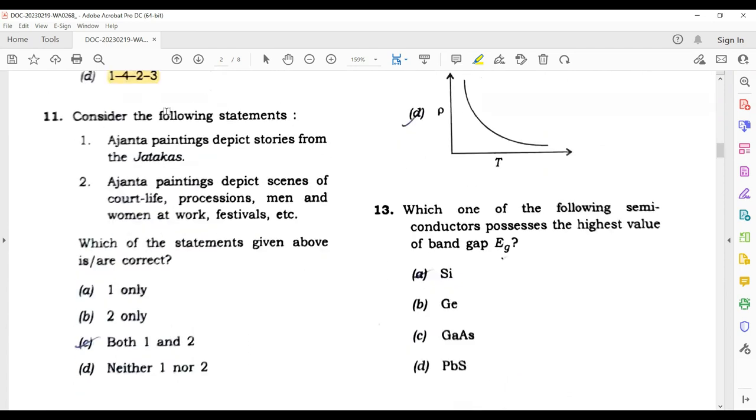This question: consider the following Ajanta paintings. Ajanta paintings show stories from Buddha's time and Jataka tales, but they don't show court-like processions or men and women at work. So the correct answer is one only. Next question: which one of the following schematic graphs correctly represents qualitatively the variation of resistivity with respect to temperature? The answer is D part. This is the correct graph.